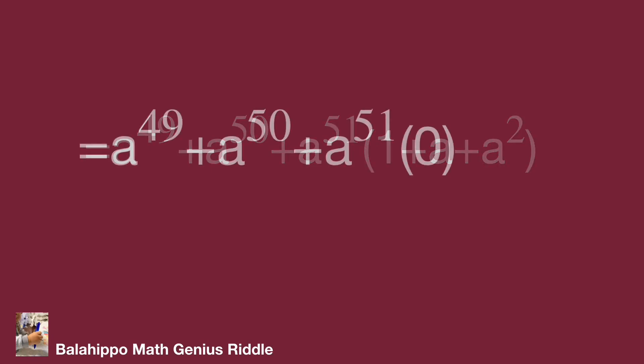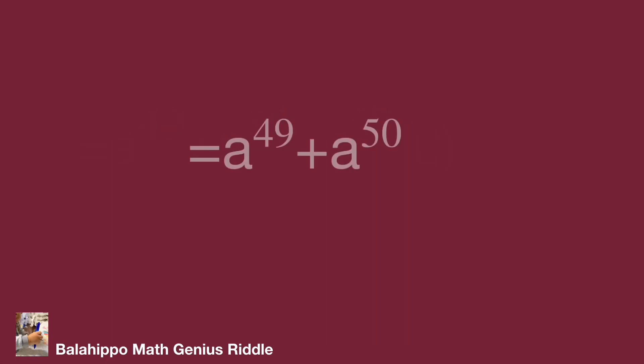Then the expression becomes a power of 49 plus a power of 50 plus a power of 51 times zero, which equals a power of 49 plus a power of 50.